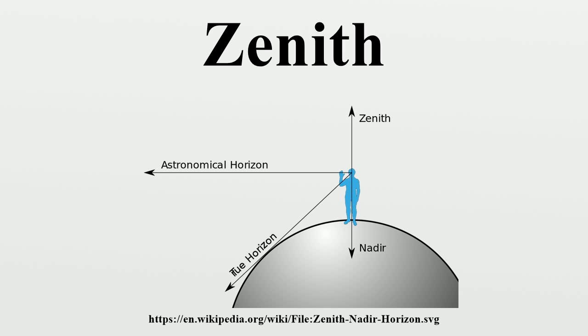The zenith is the highest point on a celestial sphere. Zenith is sometimes used as a given name, most commonly for males. Its meaning, 'highest point,' evokes success and power.